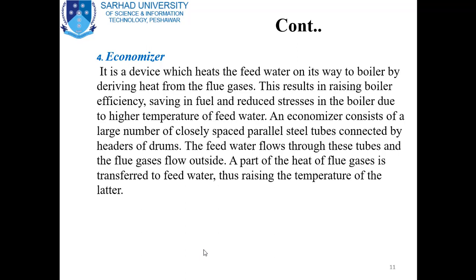An economizer is a device which heats the feed water on its way to the boiler by deriving heat from the flue gases. This results in raising boiler efficiency, saving in fuel, and reducing stresses in the boiler due to the higher temperature of feed water. An economizer consists of a large number of closely spaced parallel steel tubes connected by headers or drums. The feed water flows through these tubes and flue gases flow outside, transferring heat to the feed water.